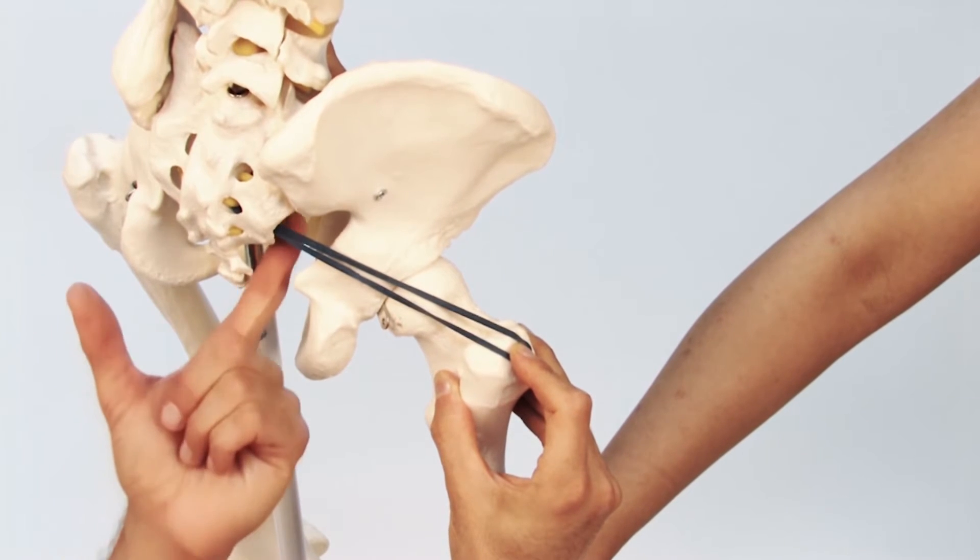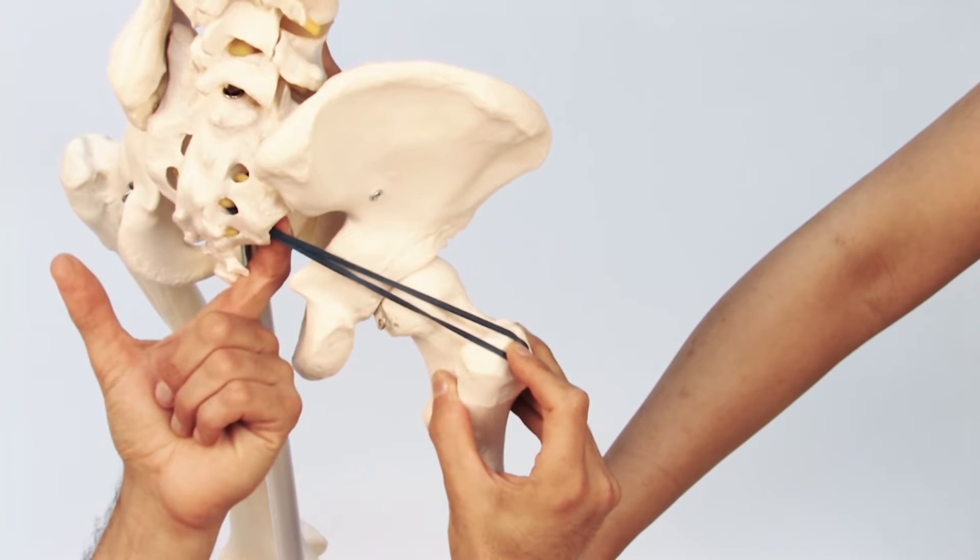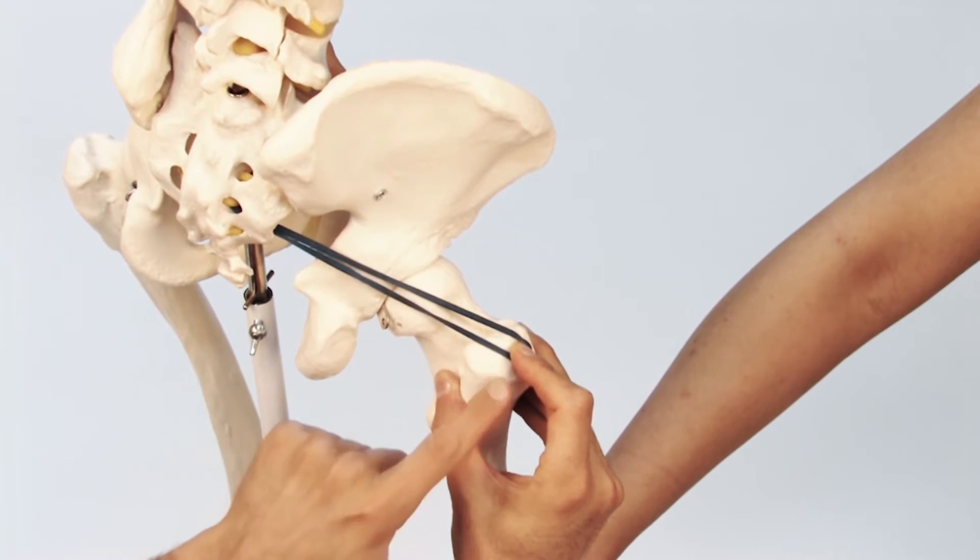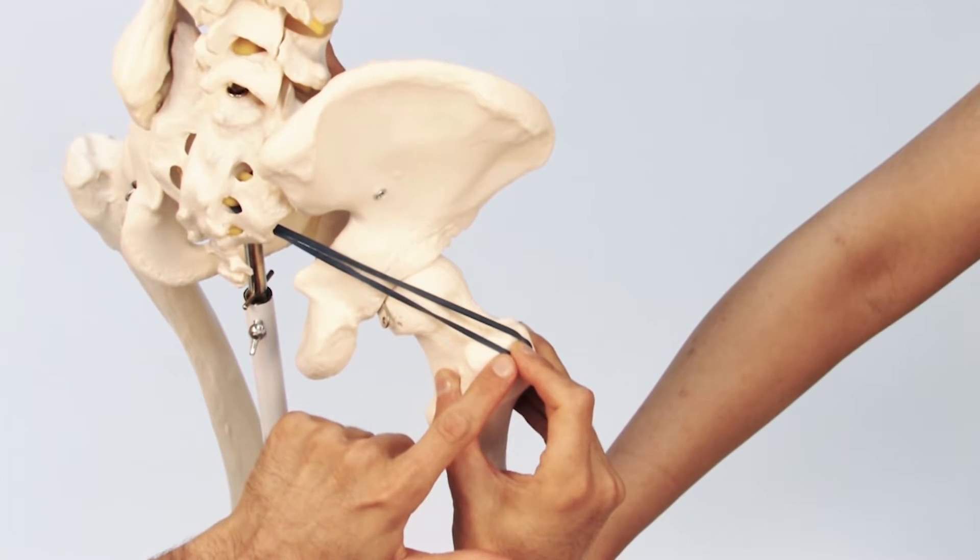The piriformis muscle attaches from the anterior side of the sacrum, crosses the hip joint to attach onto the greater trochanter of the femur.